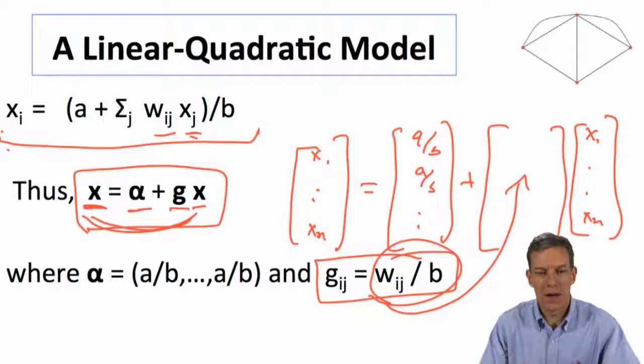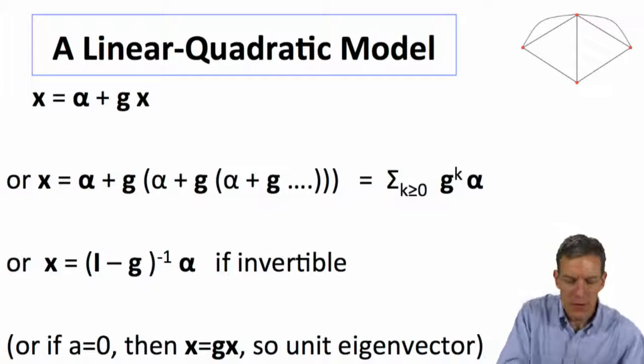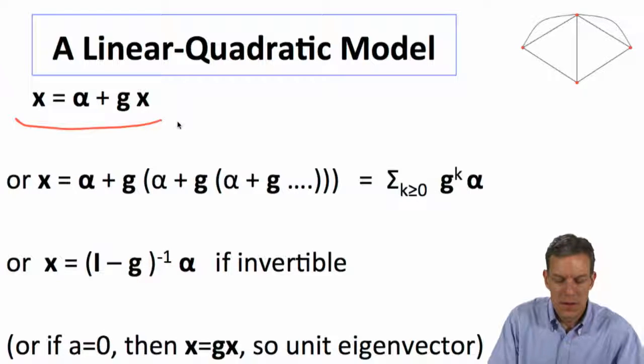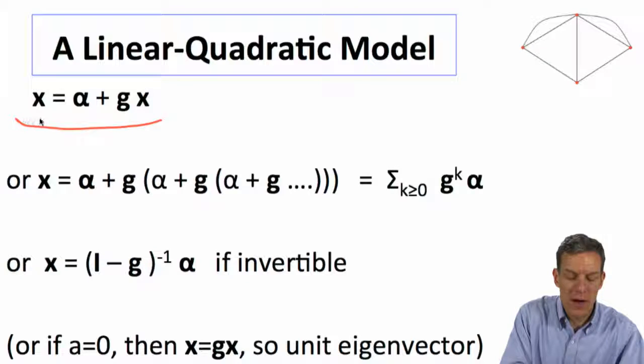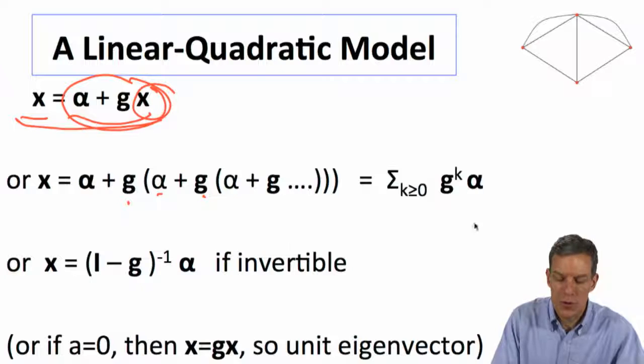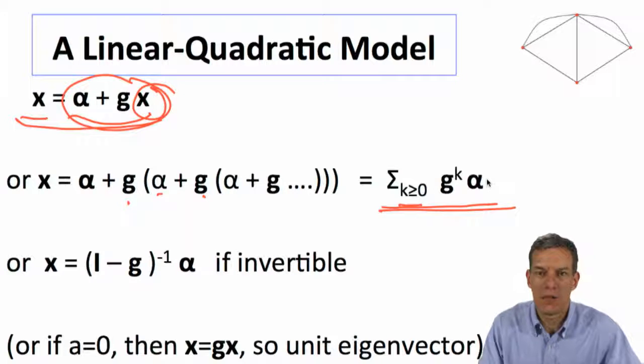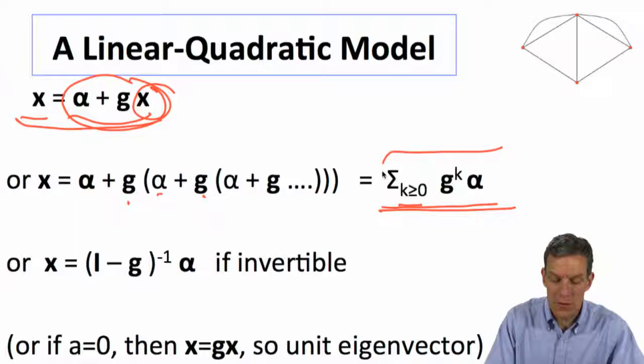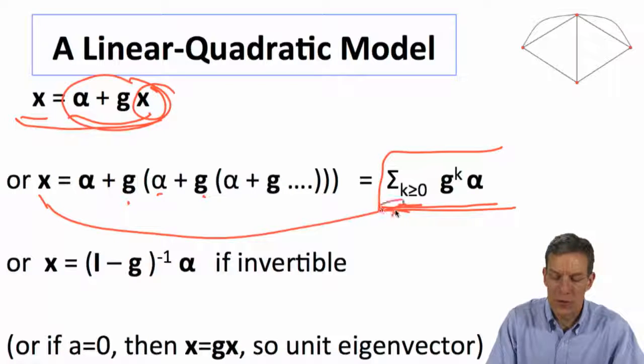Okay, so we've got a nice simple form here, and if we want to solve this then, you could rewrite this, so rewriting this, we could substitute it. Okay, x is equal to this, so substitute in this expression, put it in for x, and then do that repeatedly. What you're going to get is alpha plus g times alpha plus g times alpha plus g, and so forth, and if you look at that, you can write that as a sum of g to the k, where k is greater than zero times this alpha vector. Okay? So one way to solve for what x is, is going to say it's equal to this infinite sum.